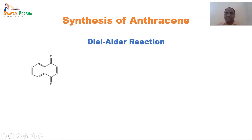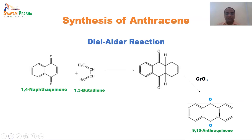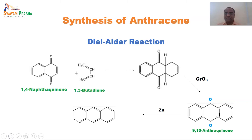Synthesis of anthracene by the Diels-Alder reaction: 1,4-naphthoquinone reacts with 1,3-butadiene. After heating, an oxidized cyclic product is formed, and further oxidation with CrO3 gives a precursor which, after distillation with zinc, is reduced to give the desired anthracene.